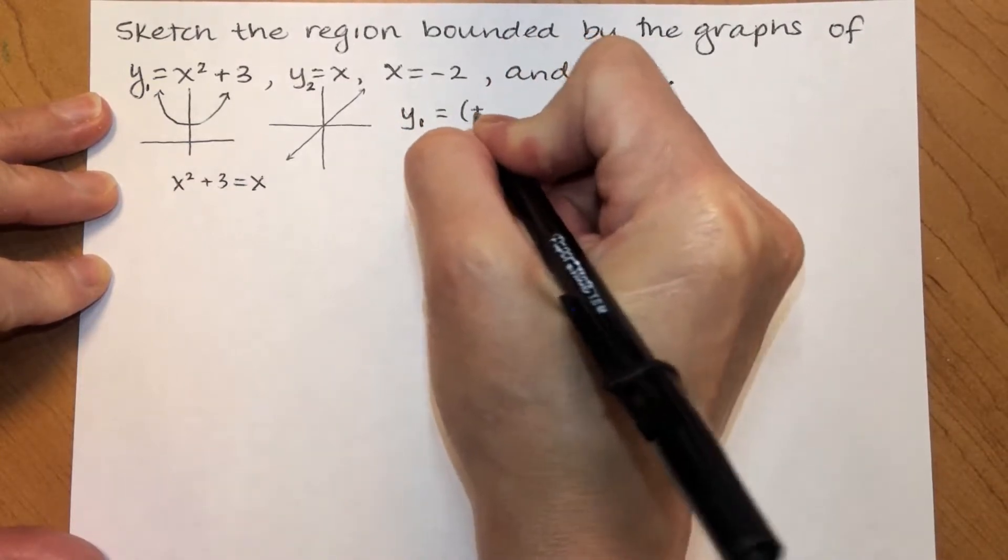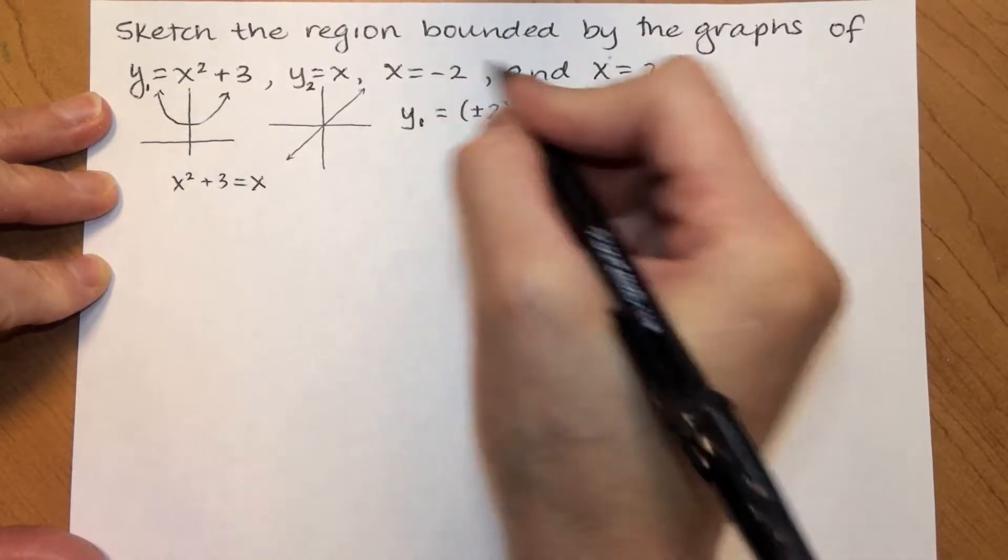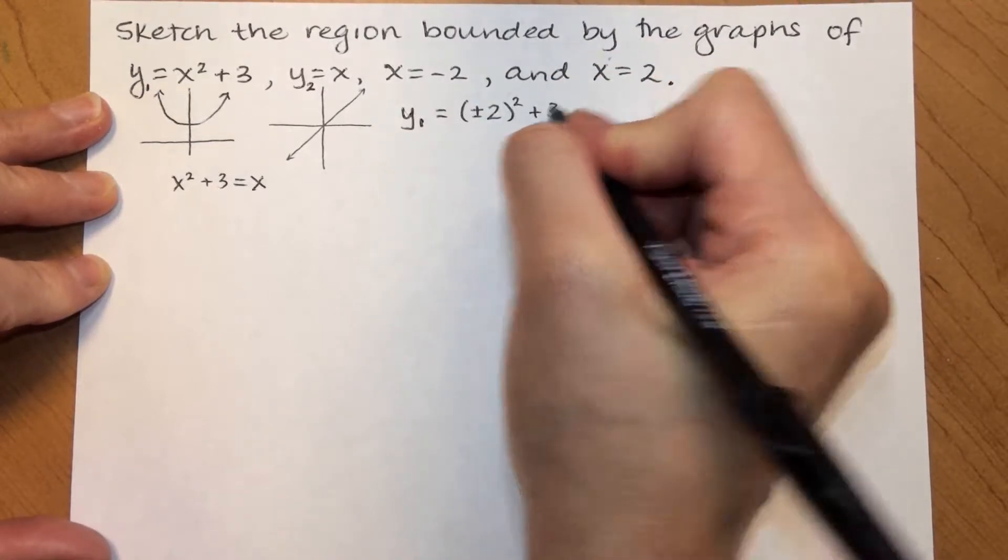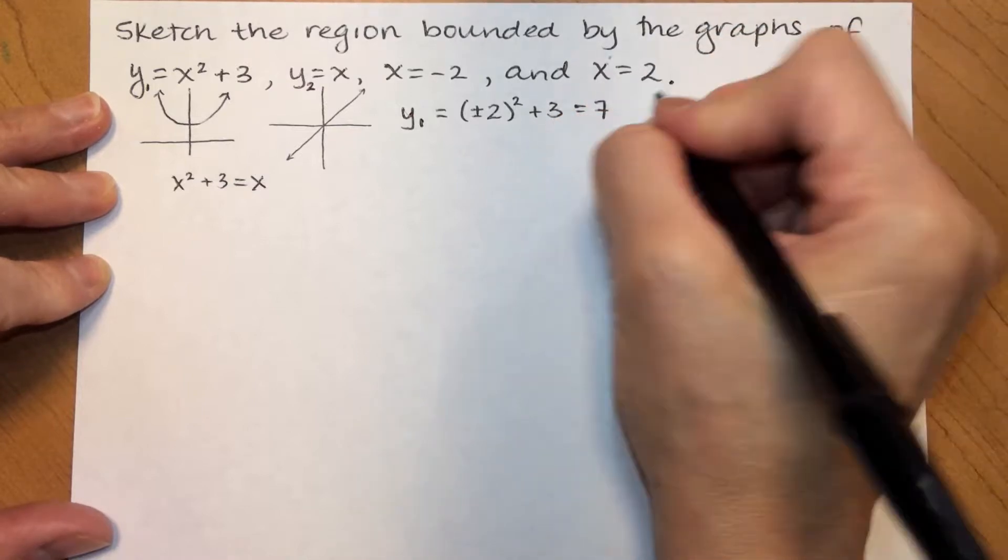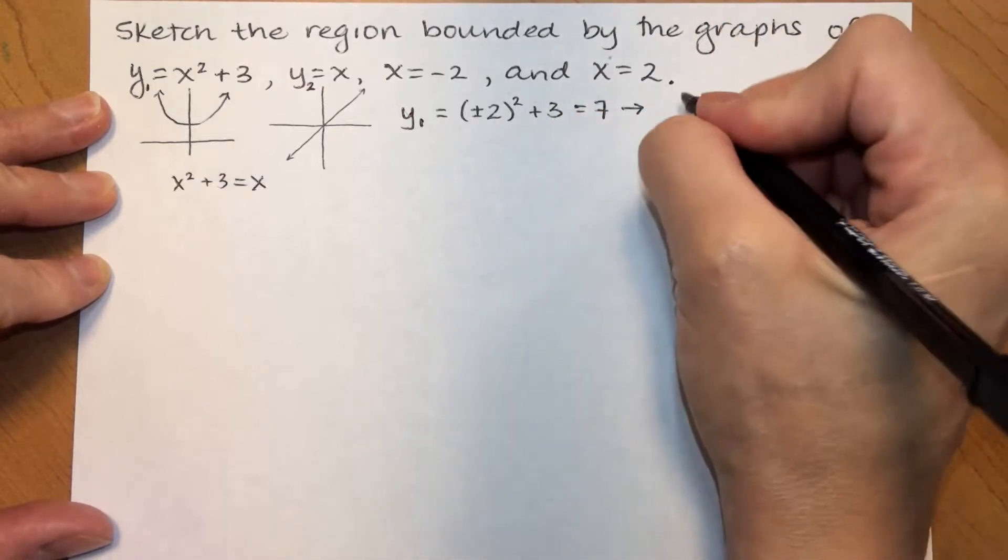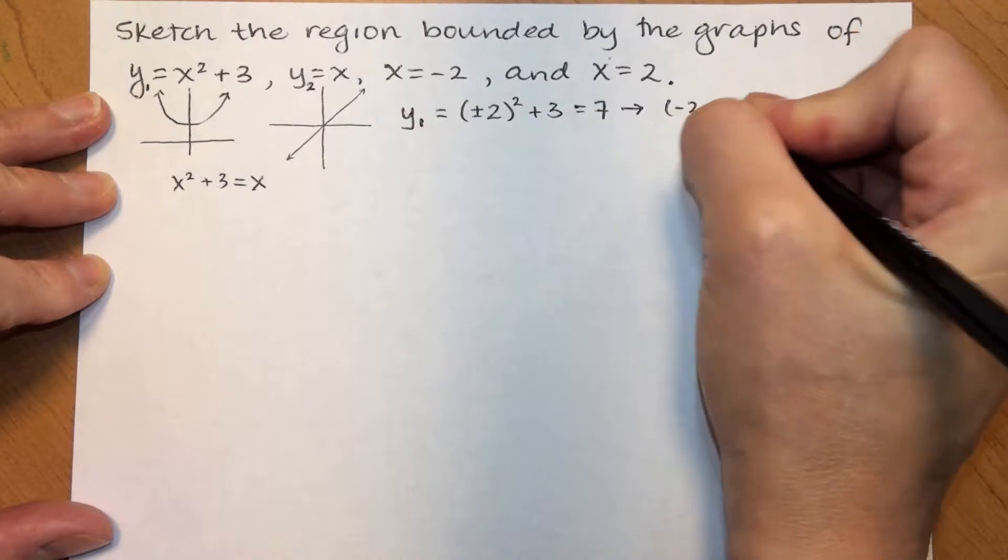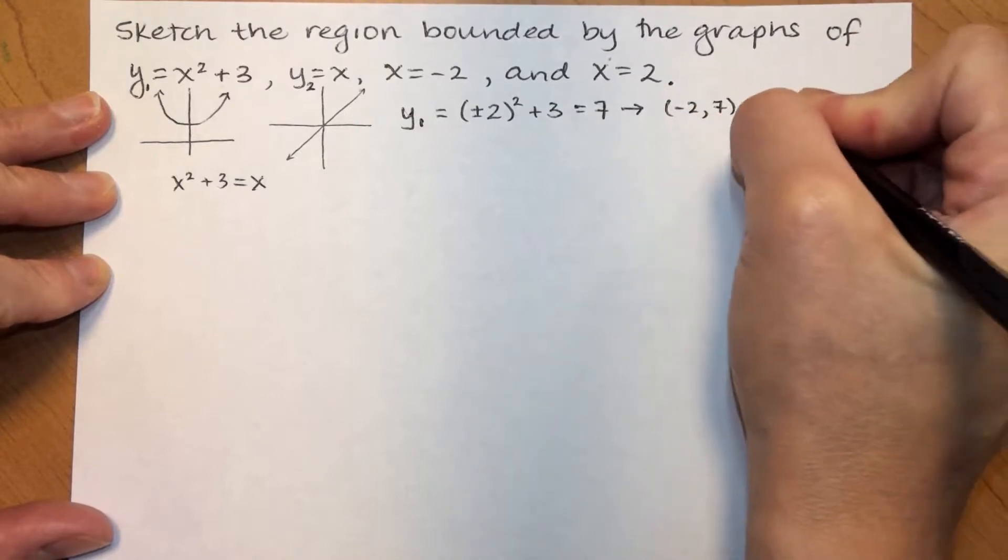if I plug that in for x, I'm going to get 4 plus 3 or 7. So, on the parabola, I'm going to have the points negative 2, 7 and 2, 7.